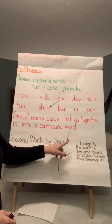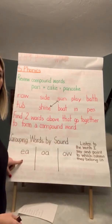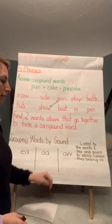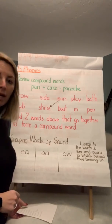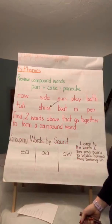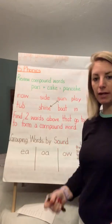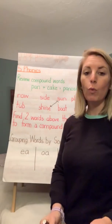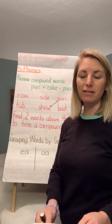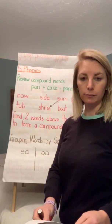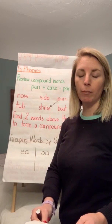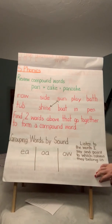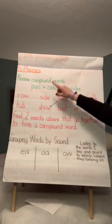Grouping words by sound. This is going to be a listening activity. Please make these columns: EA, OA, and OW. Listen to the words I say and point to which column they belong in. If you have a piece of paper, please write them. Here are the words: head, feather, coat, window, snowflake, road — like a dirt road that you might drive on — breakfast. Think about the sounds, those vowel pairs, and which column they belong in. That's our review for the phonics section.